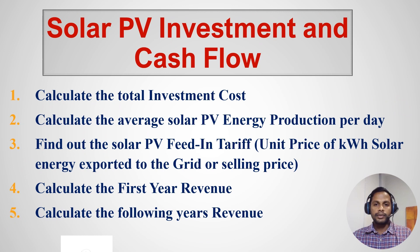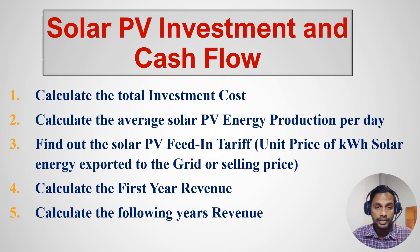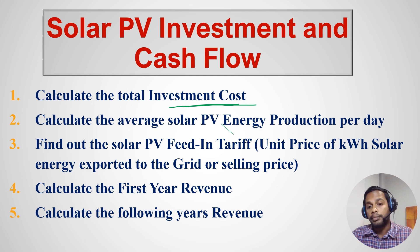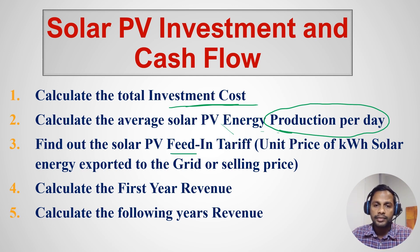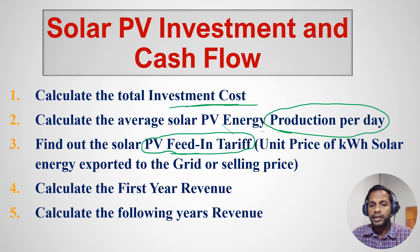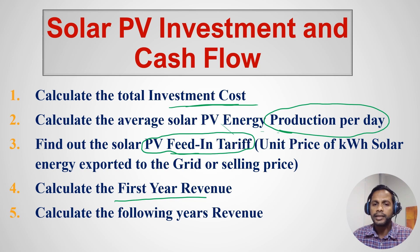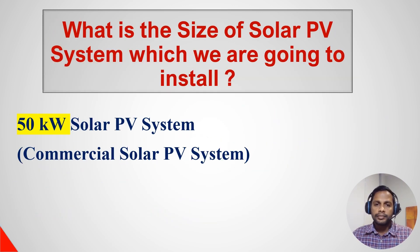A solar PV project has a lifespan of 25 years, so we get revenue from year 1 to year 25. At the beginning we invest the total investment cost, and every year up to year 25 we get revenue. For simplicity, we ignore maintenance cost and inverter replacement around years 10 to 12. To create a cash flow diagram, we evaluate five items: total investment cost, average solar energy production per day, feed-in tariff, and first and following year revenues.